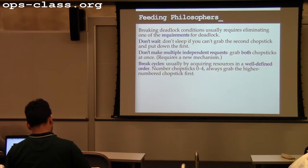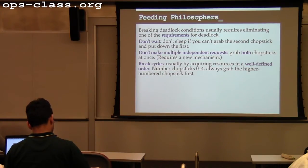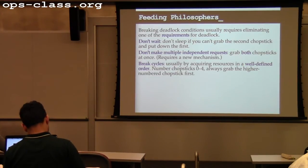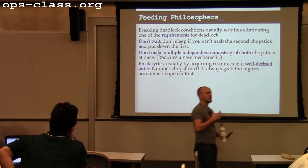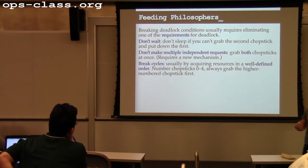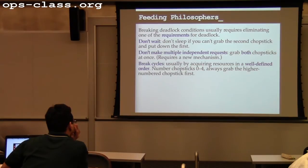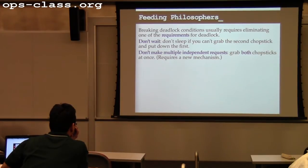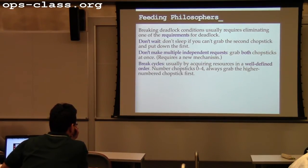The most common way to get out of deadlock is to break cycles by imposing some ordering on the requests. That ordering can be entirely arbitrary, but there has to be a well-defined order for a set of locks. If you always acquire a set of locks in a consistent order, you cannot deadlock — because you cannot have a circular dependency graph. For example, if you numbered chopsticks 0 through 4 and always grab the higher numbered chopstick first, this case wouldn't deadlock.